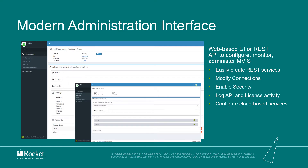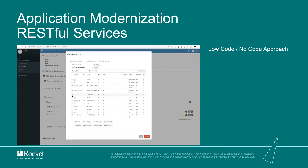MBIS provides a modern administration interface — a web console UI or REST endpoints to configure, monitor, and administer MBIS. It is easy to create REST endpoints and you can modify connections with granular configuration per account, increasing or decreasing connections per account. It has strong security, and with version 1.3.0 one more security feature was added. It has log API and license activity monitoring, and is ready for cloud-based services like CloudWatch or Azure Application Insights.